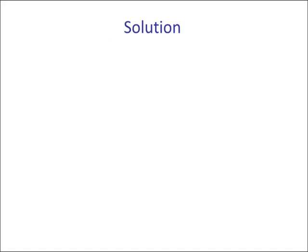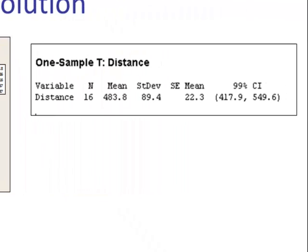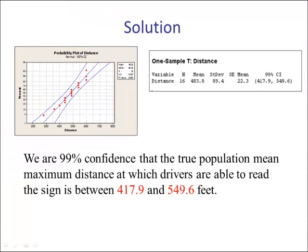Because our sample size is less than 30, we must check the assumption that the original population is normal, using a probability plot or QQ plot. The probability plot in Minitab shows all data points within the bands, giving evidence that the original population is normal. Using one-sample t at 99% confidence, the confidence interval gives: we are 99% confident that the true population mean maximum distance at which drivers are able to read the sign is between 417.9 and 549.6 feet.